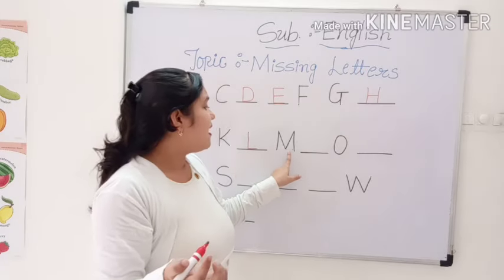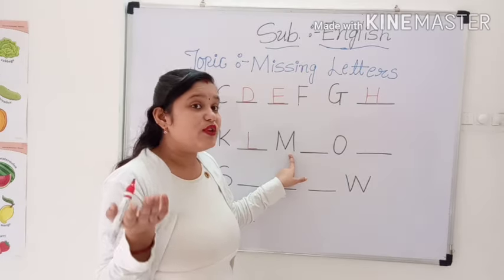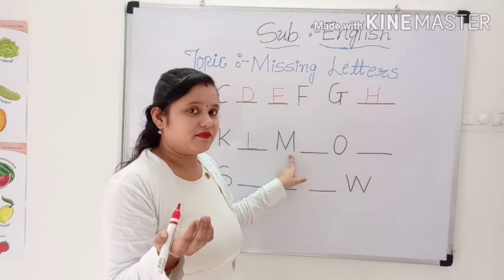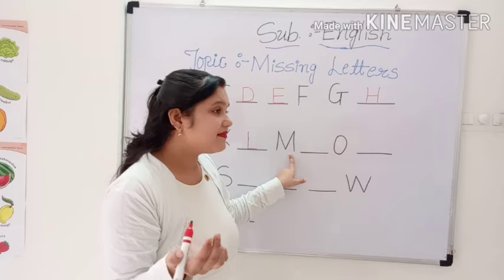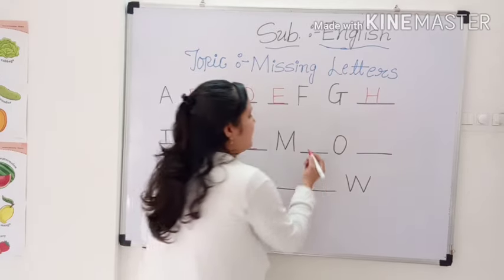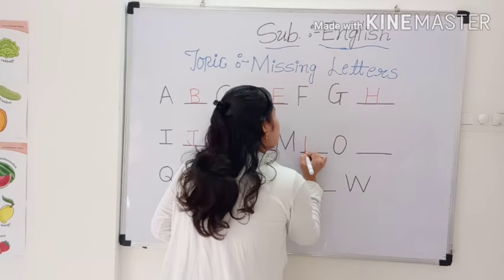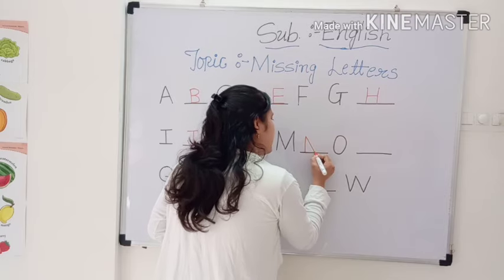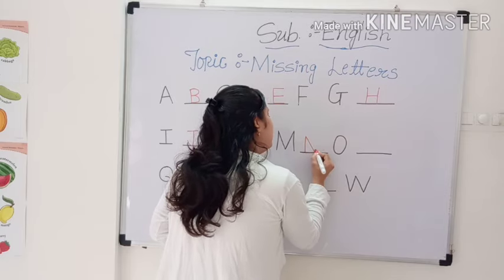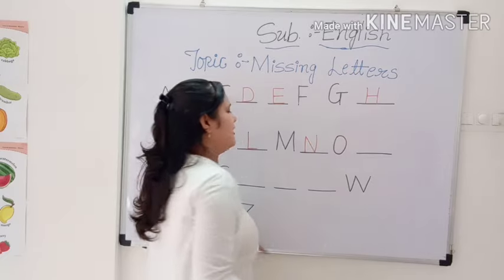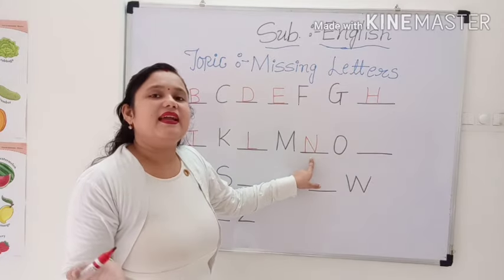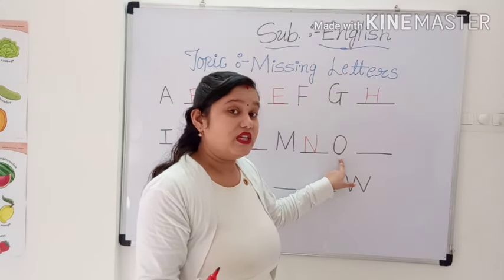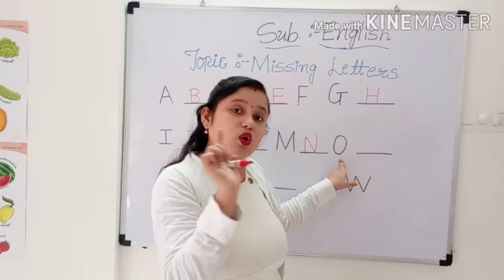After that, M. Now, which letter comes after M? N. Capital letter N. First, you can draw a standing line. Then a slanting line. Then a standing line. Makes capital letter N. Now, next, O. Which letter is this? Capital letter O.